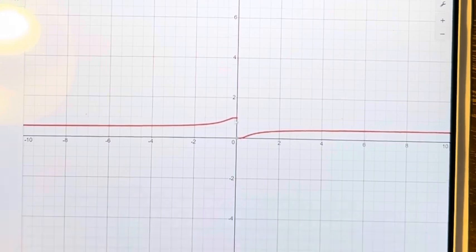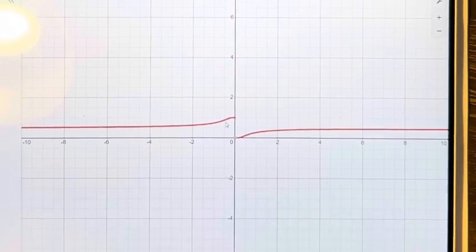Since these are not coming to the same value, the overall limit, the limit as x approaches 0, does not exist.